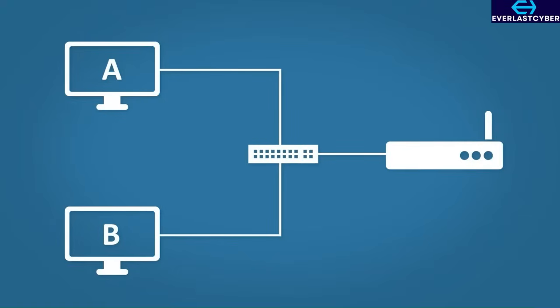We could assign these addresses manually. We only have two PCs, so it wouldn't be hard — it wouldn't be a big problem. But imagine if you had 200 plus PCs. Yeah, we don't want to be doing that. So how does DHCP sort this out?